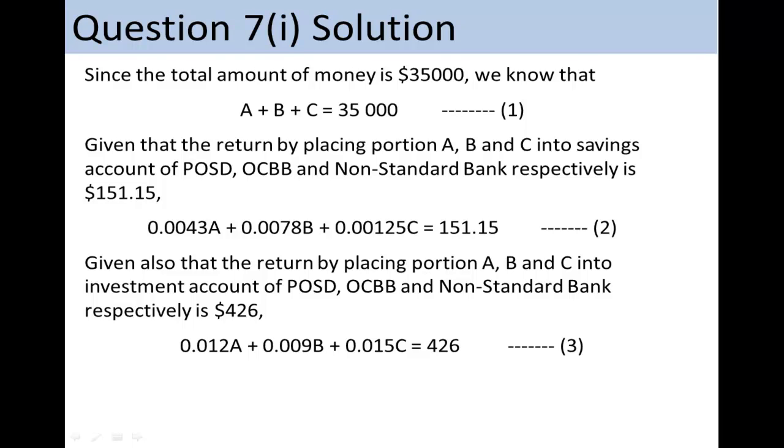We obtain the third equation, 0.012A plus 0.009B plus 0.015C equals $426.